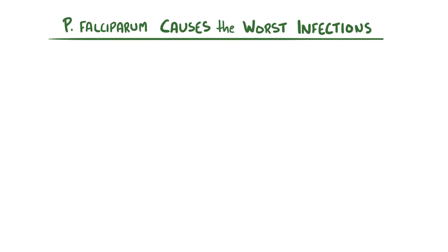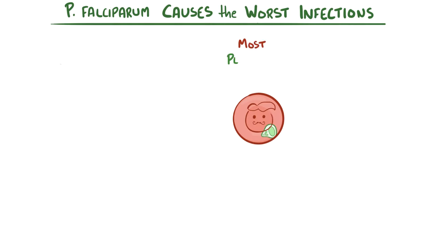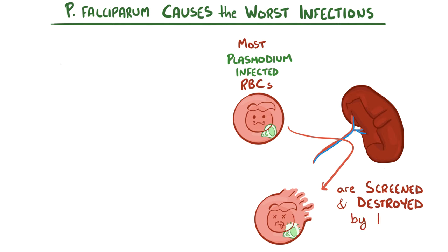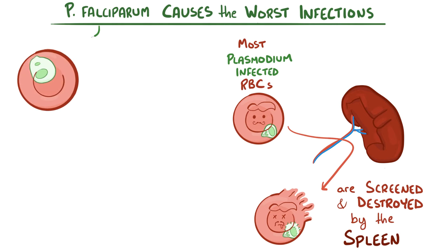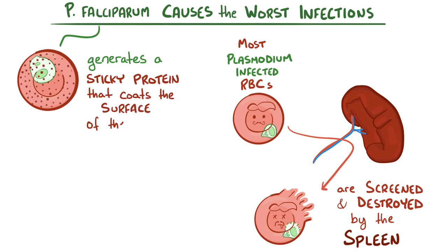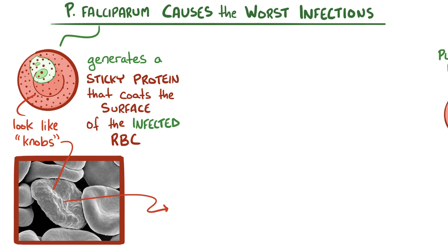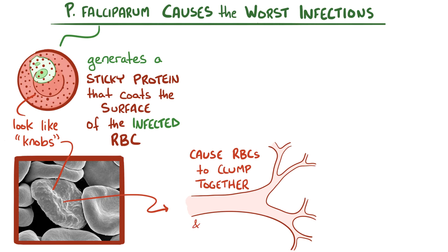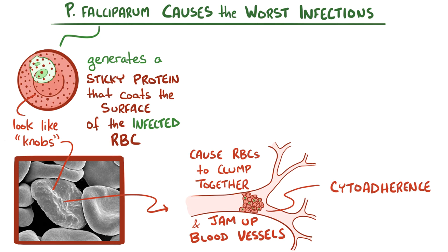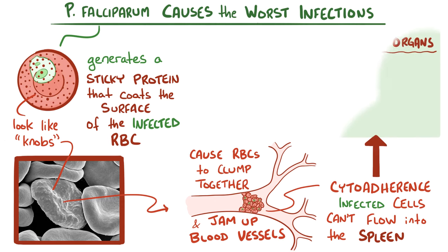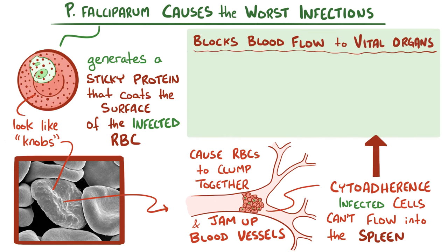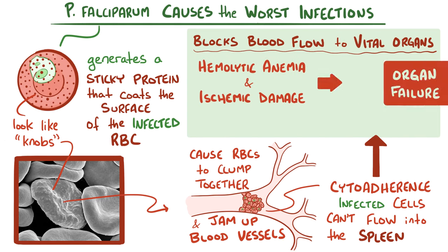Out of all the plasmodium species, Plasmodium falciparum is known for causing the worst infections. Most plasmodium-infected red blood cells get screened and destroyed by the spleen. Plasmodium falciparum, though, avoids this fate by generating a sticky protein that coats the surface of infected red blood cells, making them look like knobs or little bumps. This protein causes the red blood cells to clump together and jam up tiny blood vessels — a process known as cytoadherence — which blocks infected cells from flowing into the spleen and also blocks blood flow from reaching other vital organs.